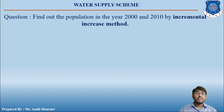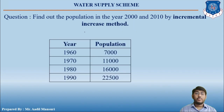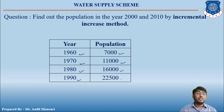The question is: find out the population in the years 2000 and 2010 by the incremental increase method. Given data: 1960 – 7,000; 1970 – 11,000; 1980 – 16,000; and 1990 – 22,500.